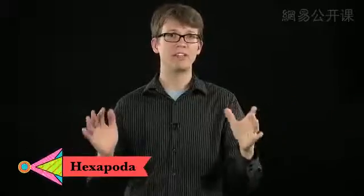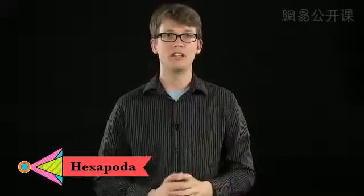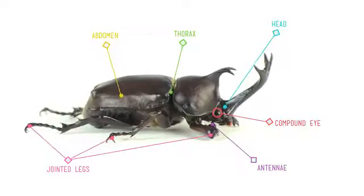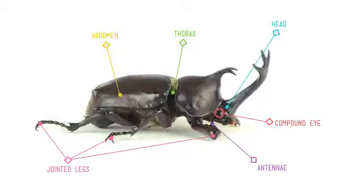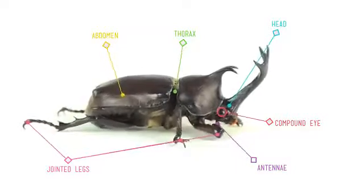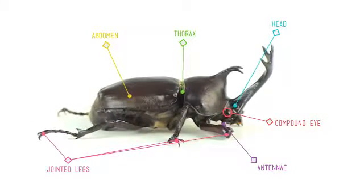But please, save some love for the hexapoda, meaning six feet, most of which are insects. The synapomorphies they share are three-part bodies consisting of a head, a thorax, and an abdomen, three pairs of jointed legs that come off the thorax, compound eyes, and two antennae.